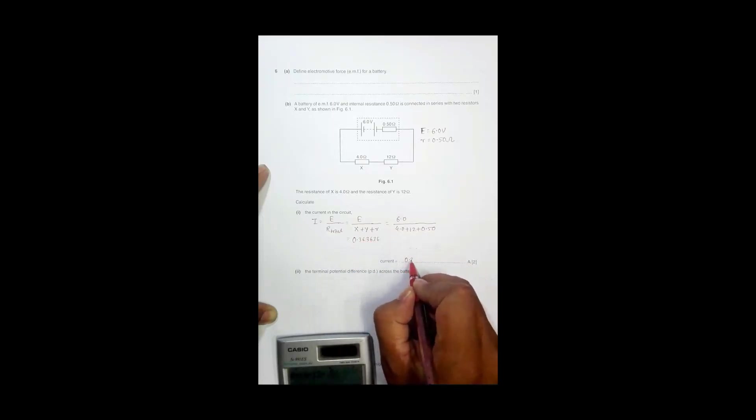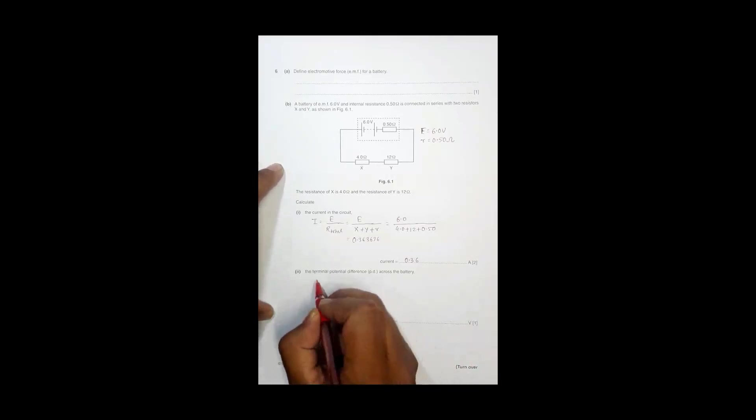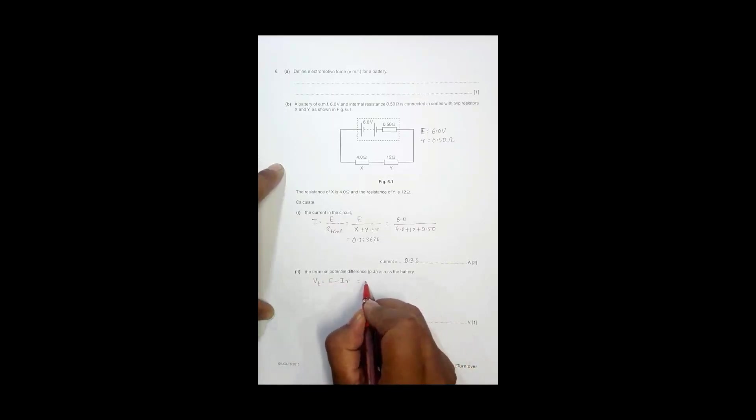Now the next question is we need to find the terminal potential difference. So that's equal to, I can use the formula V terminal is equal to E minus I into small r, and that's equal to 6.0 volt minus I is 0.36 and this small r is equal to 0.50.